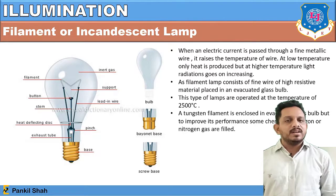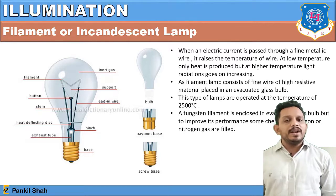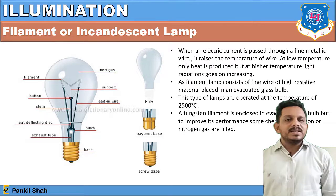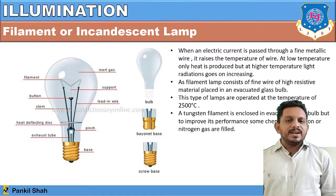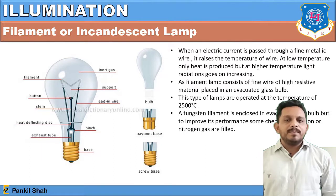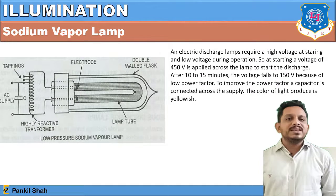At low temperature only heat is produced, but at higher temperature the light radiation increases and light is emitted. The filament lamp consists of a wire of high resistance and high melting point material placed in an evacuated glass tube. These lamps operate at about 2500 degrees centigrade. The tungsten filament is enclosed in an evacuated lamp, and to improve performance, chemical gases like nitrogen are also fed in.